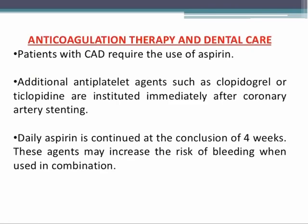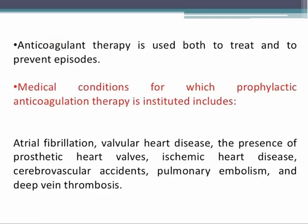Regarding patients on anticoagulant therapy: patients with coronary artery disease require aspirin as anticoagulation medication. Additional antiplatelet agents such as clopidogrel or ticlopidine are instituted immediately after coronary artery stenting, and daily aspirin is continued at the conclusion of four weeks. These agents increase the risk of bleeding when used in combination. Anticoagulant therapy is used both to treat and prevent recurrence of coronary artery disease. Medical conditions for which prophylactic anticoagulation therapy is instituted include atrial fibrillation, valvular heart disease, prosthetic heart valves, ischemic heart disease, and cerebrovascular accidents.